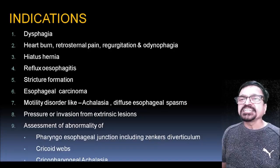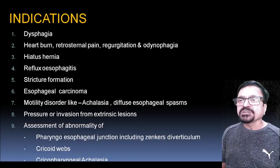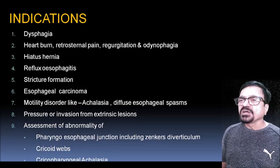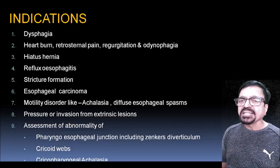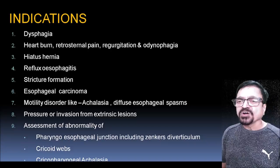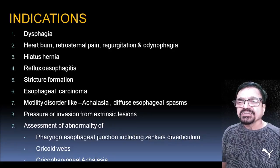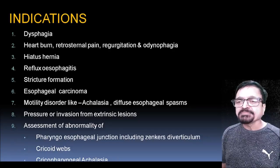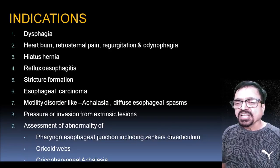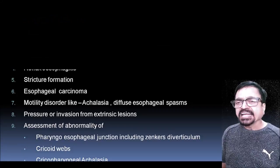Indications for barium swallow include dysphagia, heartburn, retrosternal pain, regurgitation, odynophagia, hiatus hernia, reflux esophagitis, stricture formation, esophageal carcinomas, motility disorders like achalasia and diffuse esophageal spasm. It can also assess pressure effects or invasion from extrinsic malignancies, as well as abnormalities of the pharyngoesophageal junction including Zenker's diverticulum, cricoid webs, and cricopharyngeal achalasia.